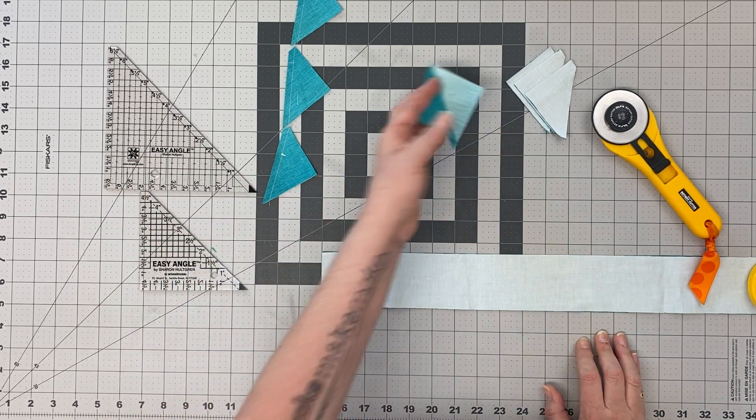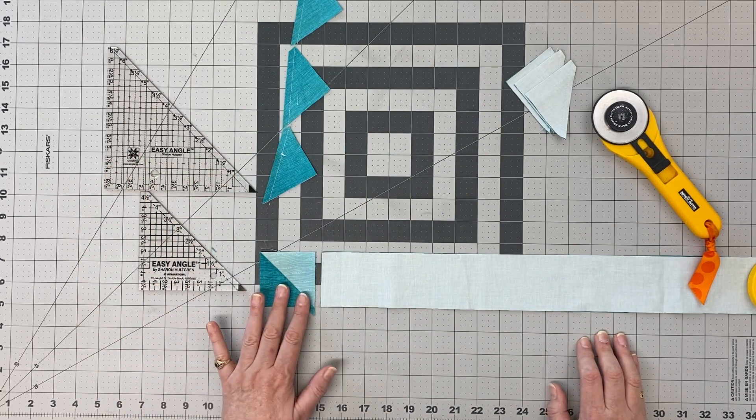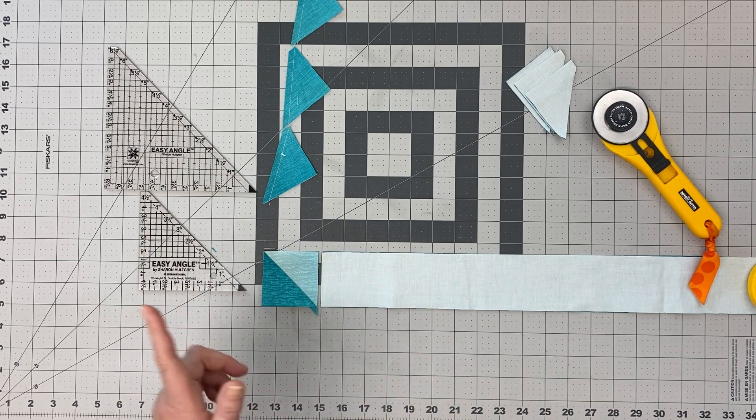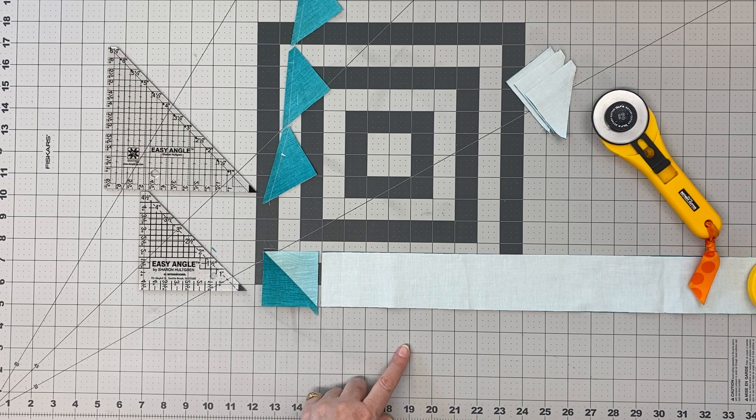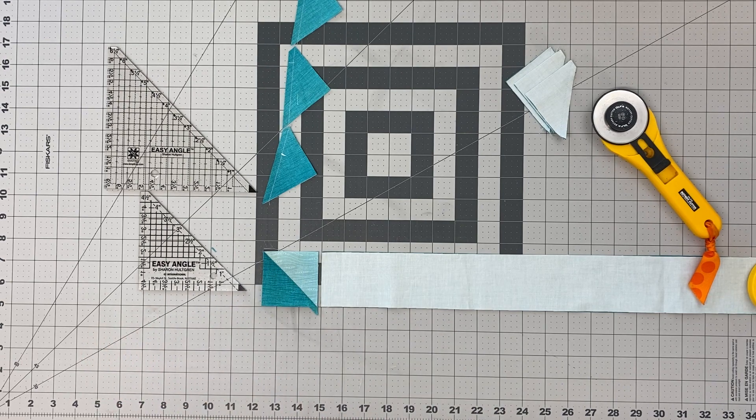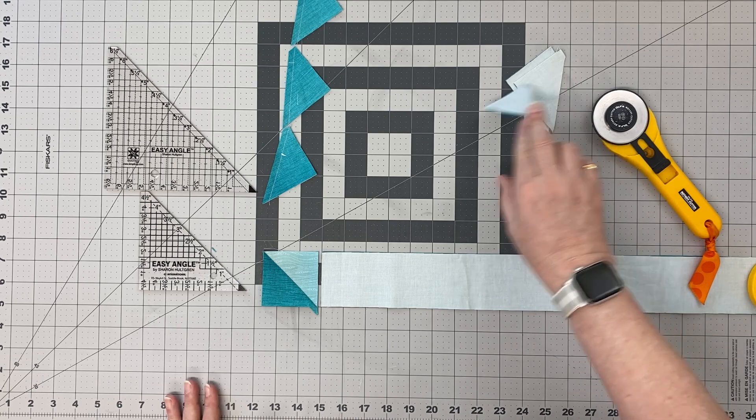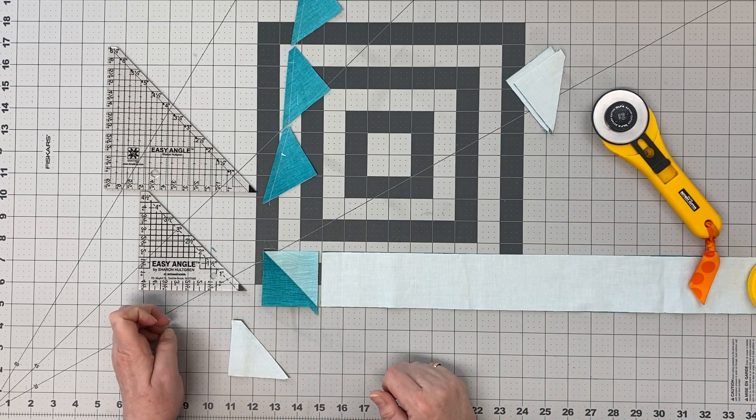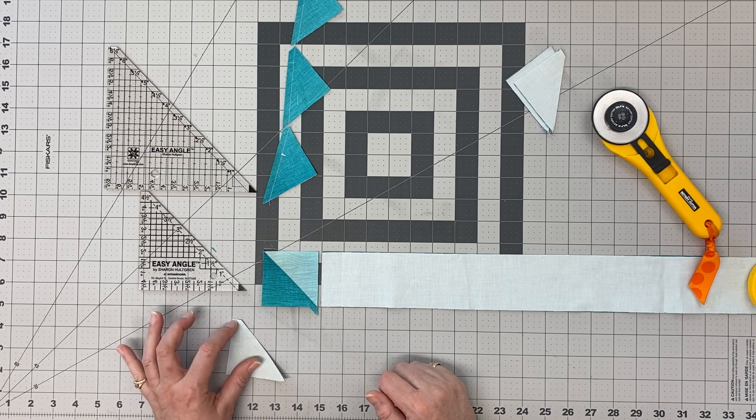make HSTs that come out the same size as the strip you're using. If you're combining HSTs and squares in a quilt, it's easy to cut multiples this way. One nice thing about the way it cuts out is you already have one of the dog ears taken off, and it also gives you a point